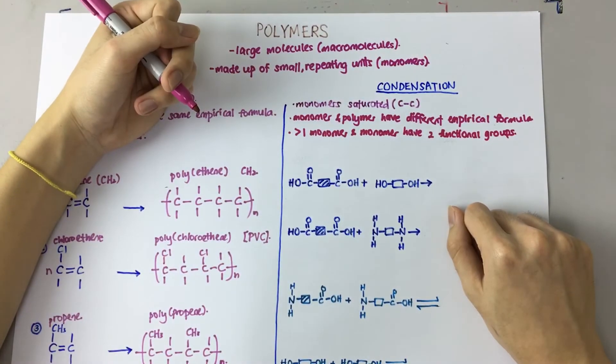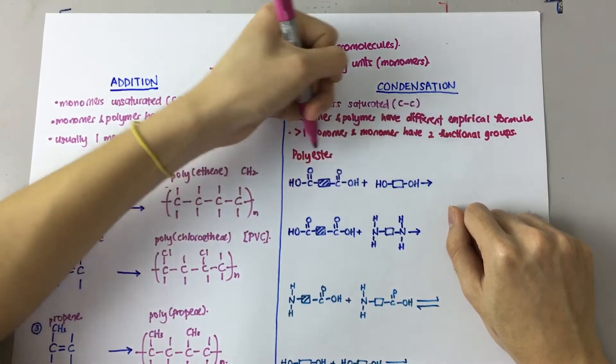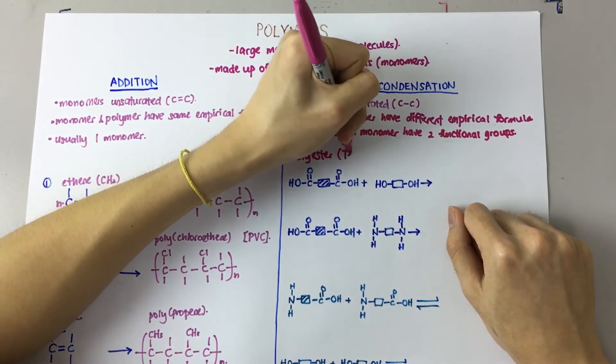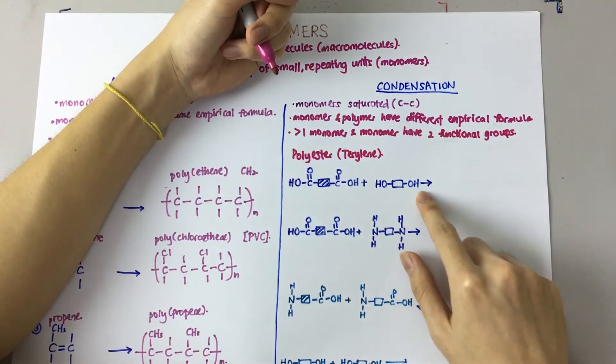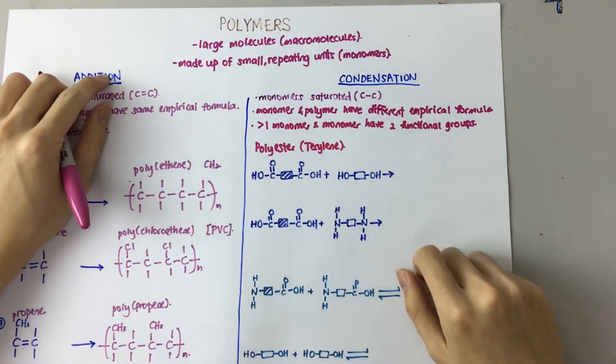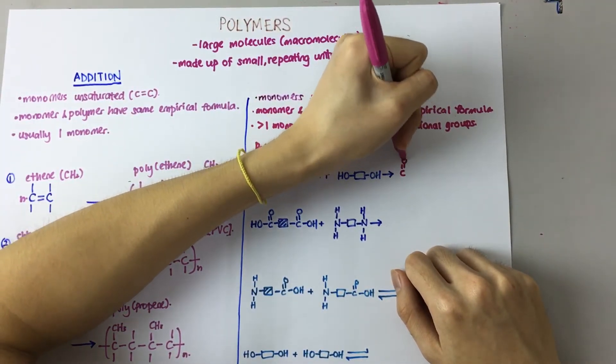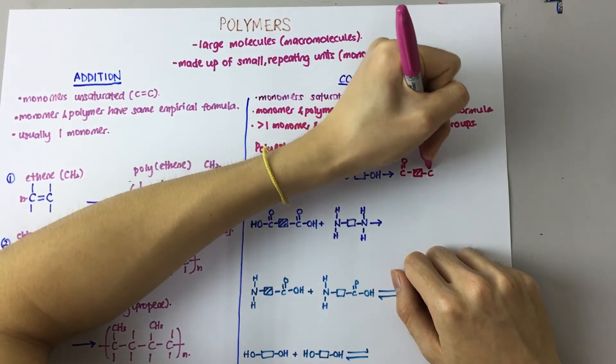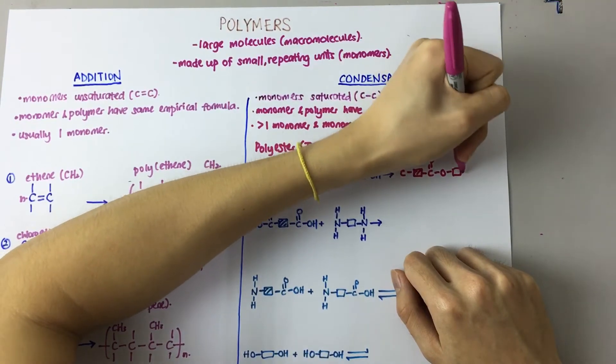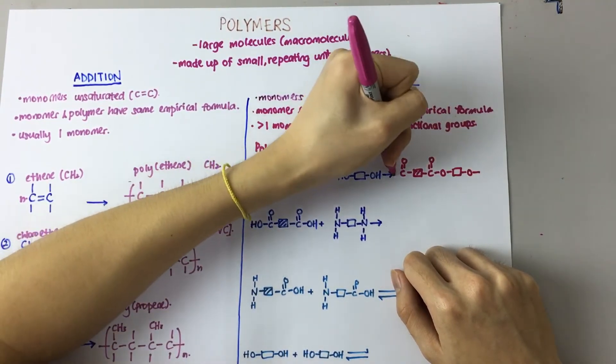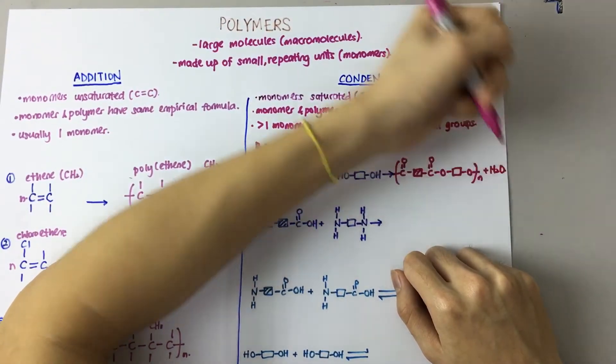Alright, now let's look at the first class, which is polyester. And the example here we look at is terylene. So, these are the monomers. What happens when it becomes a polymer? It looks something like this... and water is lost.